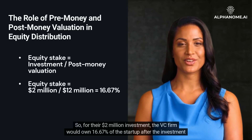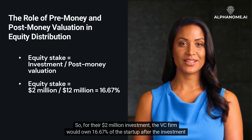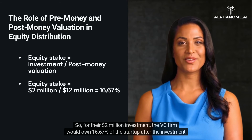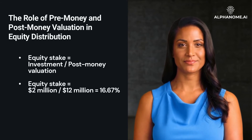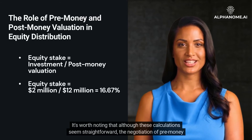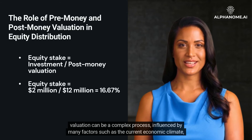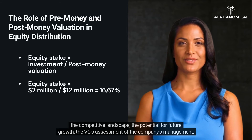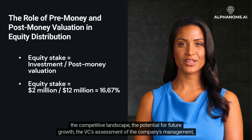So, for their $2 million investment, the VC firm would own 16.67% of the startup after the investment is made. It's worth noting that although these calculations seem straightforward, the negotiation of pre-money valuation can be a complex process, influenced by many factors such as the current economic climate, the competitive landscape, the potential for future growth, the VC's assessment of the company's management, and more.